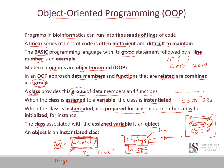You can assign the same class numerous times — so 'b = MyClass()' and 'c = MyClass()' — giving you multiple instantiations. Each variable refers to the class, but once instantiated and initialized, it is referred to as an object. Each of these three variables refers to different objects, but all objects will be of the same class.